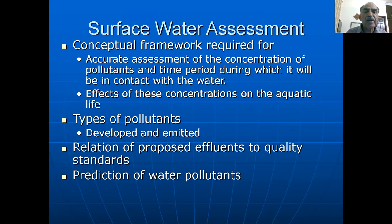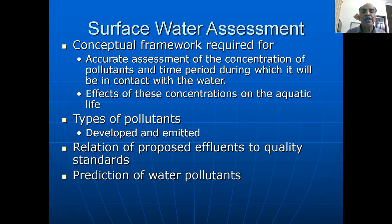Surface water coming from rainfall and other sources moves from different parts of rivers, from glaciers, and ultimately goes to the sea. This water is highly polluted with industrial waste effluents. An accurate assessment of the concentration of pollutants and the time period during which they will be in contact with the water, as well as the effects of these concentrations on aquatic life, is essential. There are two types of pollutants: emitted, which come from effluents, and those developed during chemical reactions. The relation of proposed effluents to quality standards and the prediction of water pollutants are some of the considerations normally taken into account during surface water assessment.